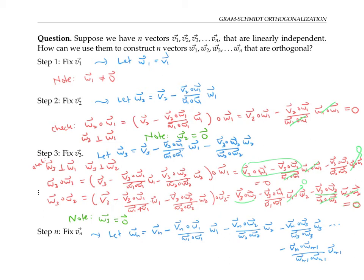Whenever we dot this wn with a previous w vector, we get zero. For example, dotting with w3, all terms involving earlier w's vanish because they're mutually orthogonal, and after canceling the w3 · w3 terms we're left with vn · w3 minus vn · w3, which equals zero. A similar argument shows that wn dotted with w4 or any other previous w also gives zero. So in the end we have w1 through wn, all orthogonal — and arguments like those above show they are all nonzero vectors.